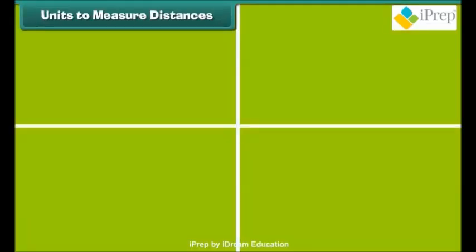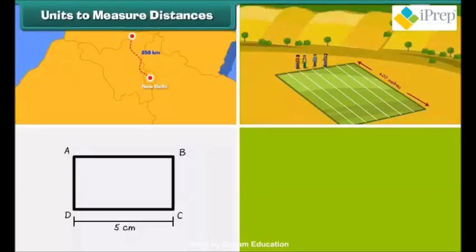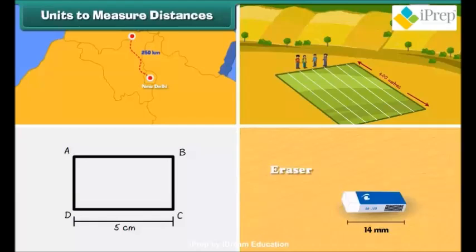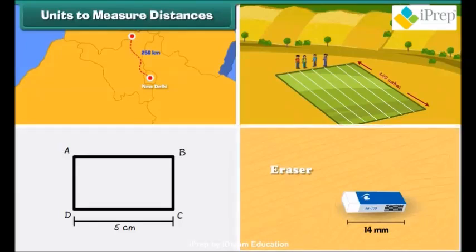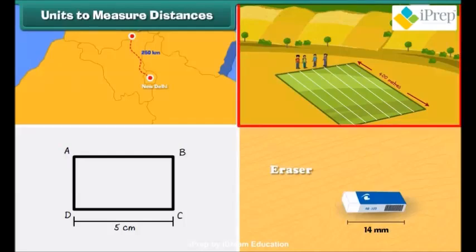We find that kilometer, meter, centimeter, millimeter are the units used for measuring distances. Among these, kilometer is the biggest unit used for measuring long distances, while millimeter is the smallest unit used for measuring very small lengths. The standard unit of distance is meters.